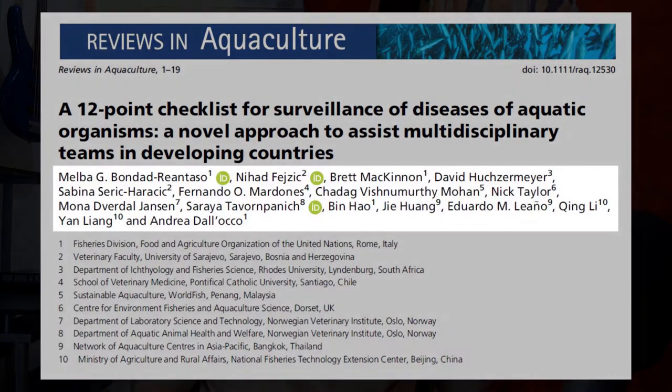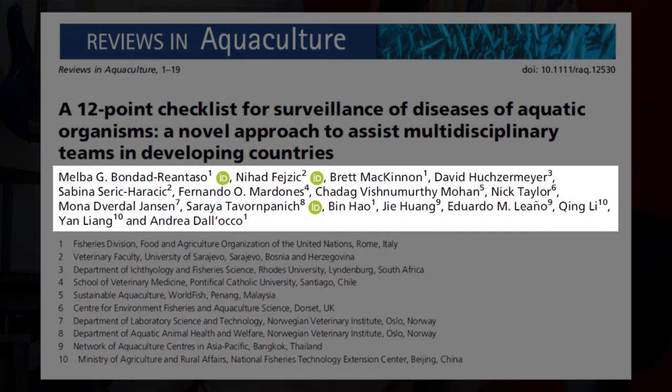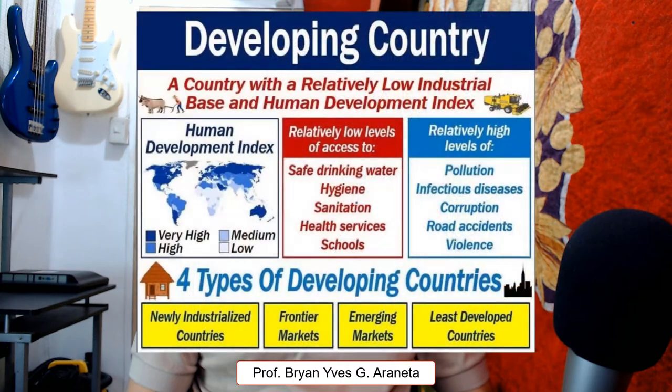As you can see here, you can find all the authors who contributed to this paper. This is definitely something to read. The title is self-explanatory — a checklist that can be used in designing and executing active surveillance of aquaculture species was developed, and it is geared towards multidisciplinary teams in developing countries.